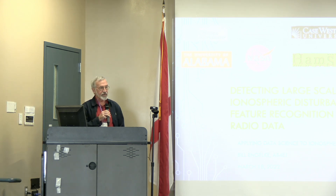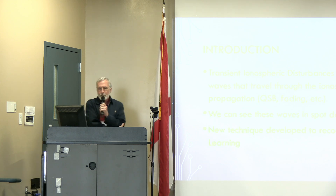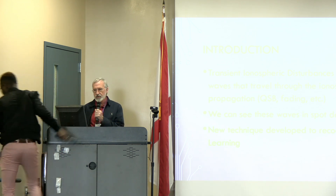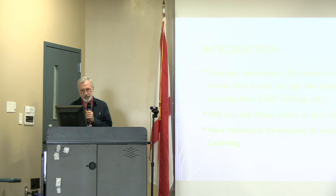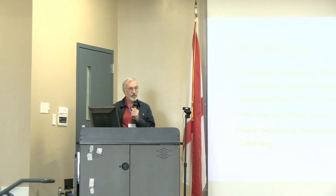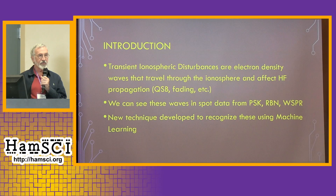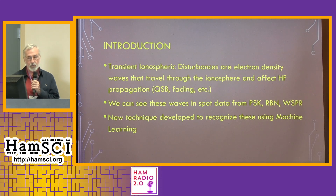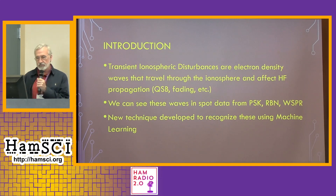We're talking a lot about using spot data today to do various things, and this is one of them. First, a quick reminder for anybody not familiar: we have these things called TIDs — transient ionospheric disturbances. These are electron density waves that propagate through the ionosphere and affect HF propagation. You see this manifested in QSB fading, and there can be large-scale, which are one to four hours in period, and medium-scale. You can actually see these waves traveling when you look at data from PSK, RBN, and Whisper. So I developed a new technique to recognize these using machine learning.